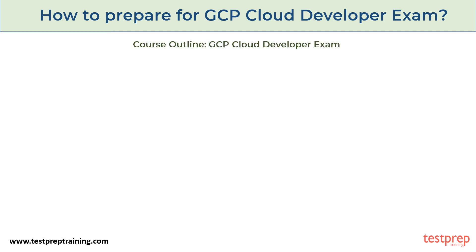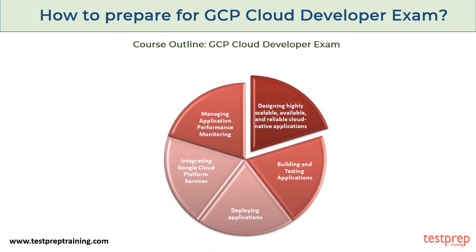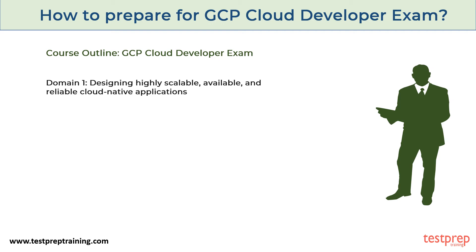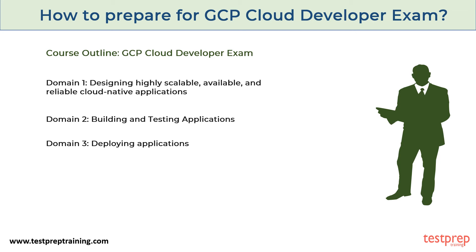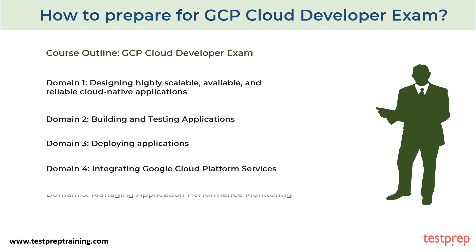Course Outline: GCP Cloud Developer Exam. The course outline forms the most important part of your preparation. Domain 1: Designing highly scalable, available, and reliable cloud native applications. Domain 2: Building and testing applications. Domain 3: Deploying applications. Domain 4: Integrating Google Cloud Platform Services. Domain 5: Managing application performance monitoring.